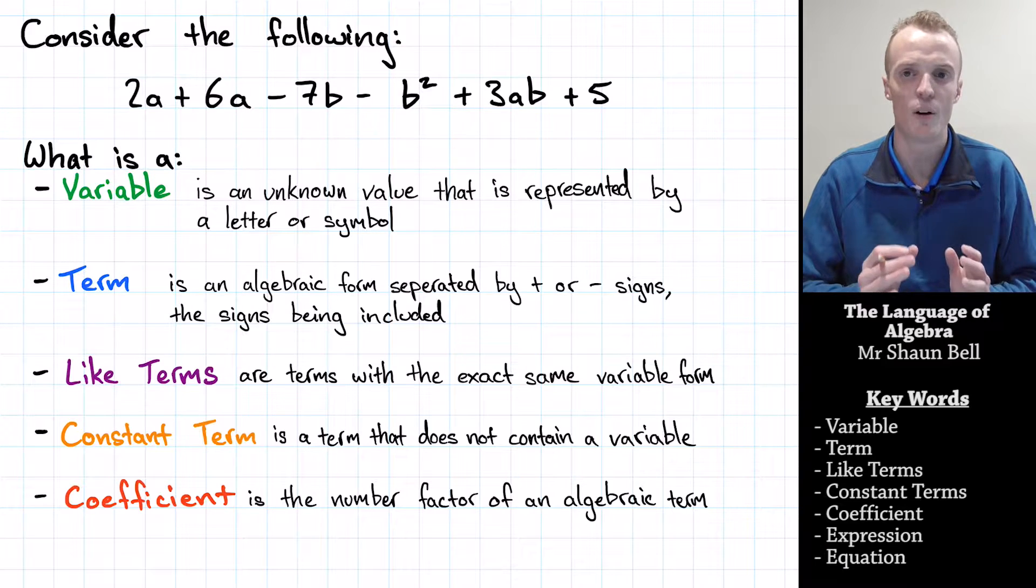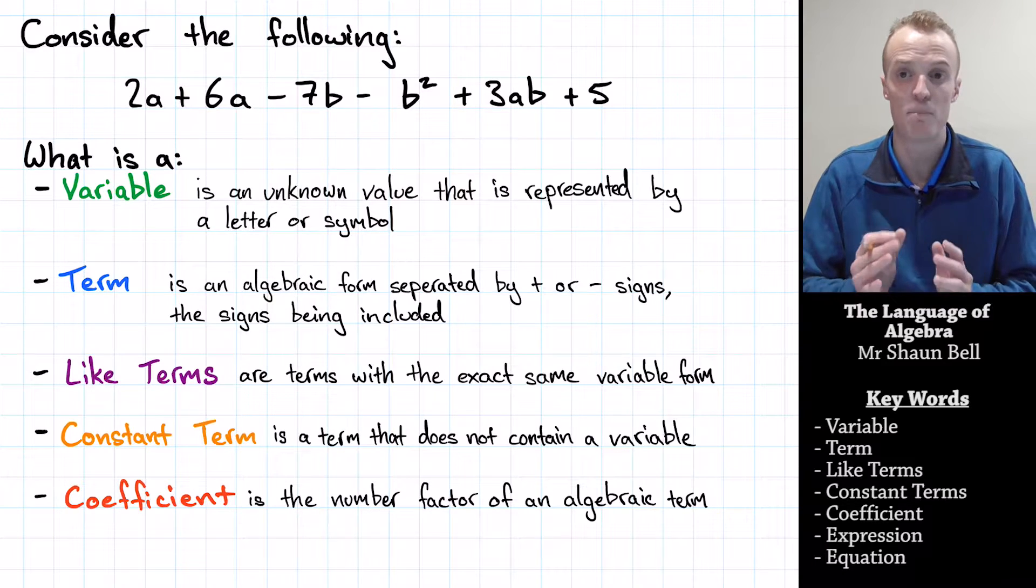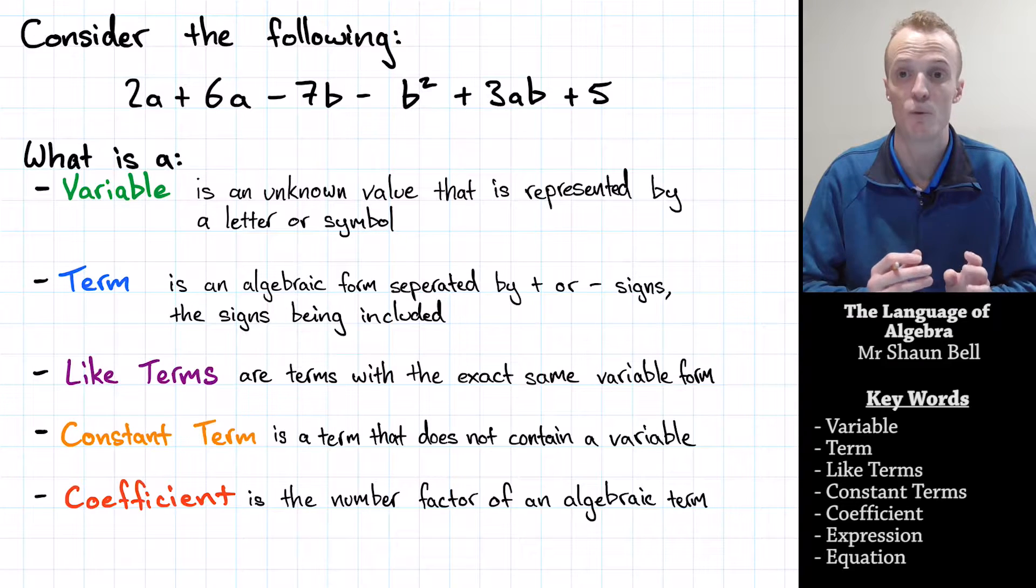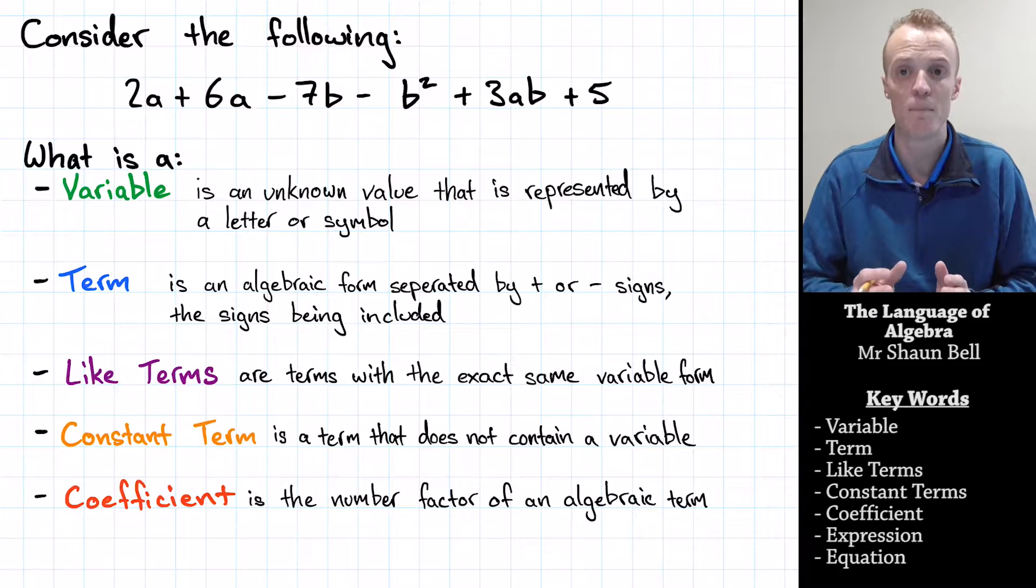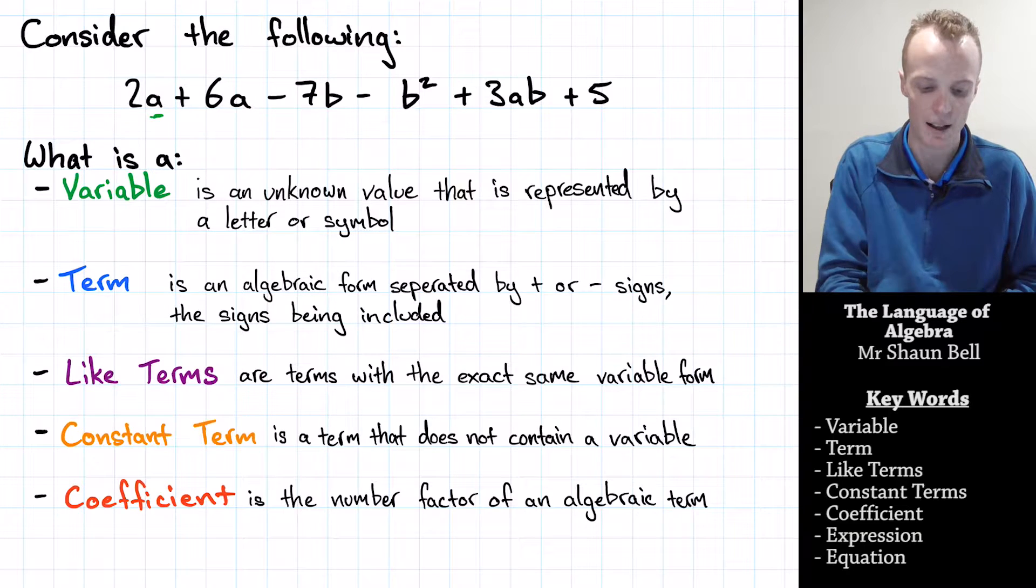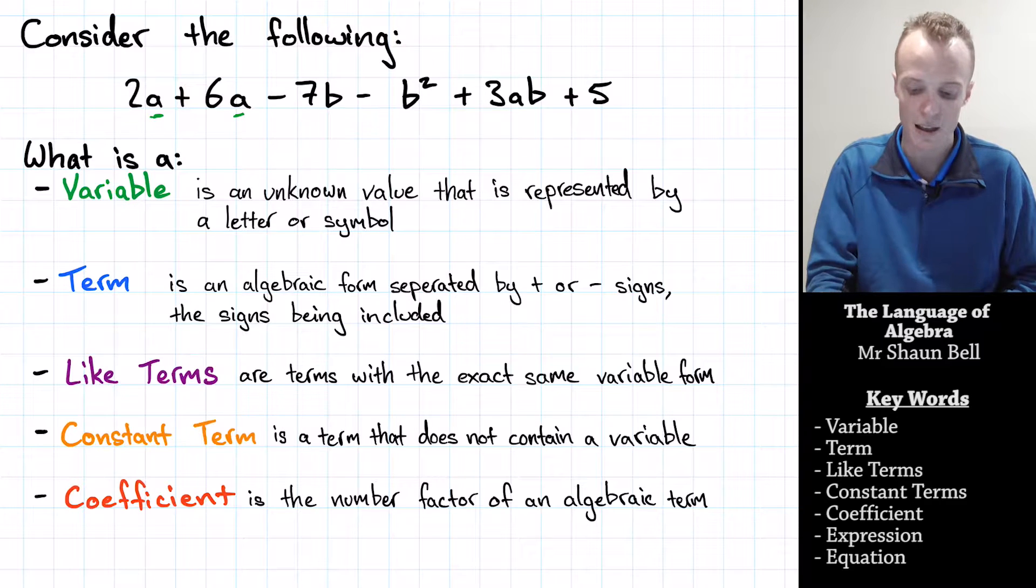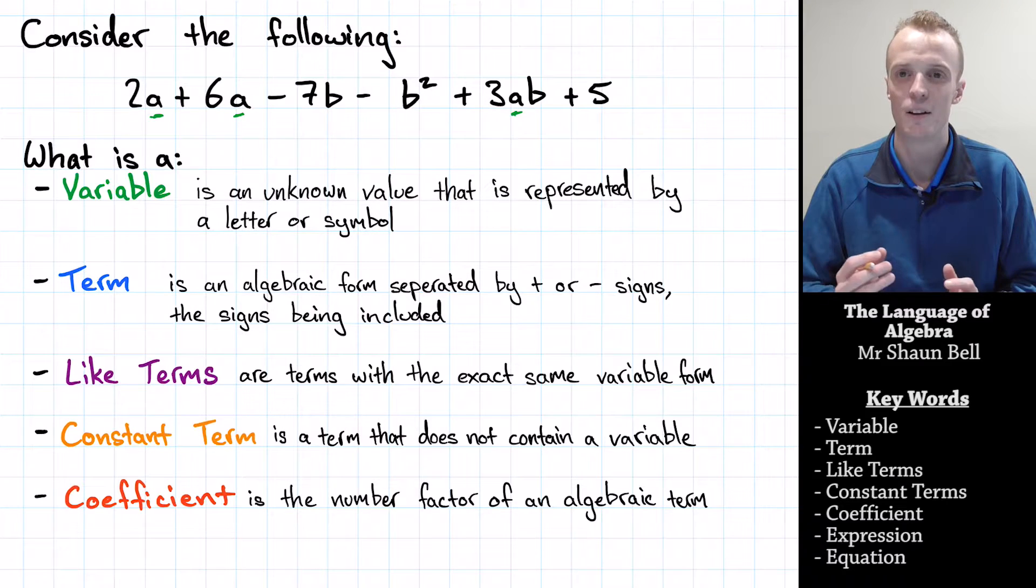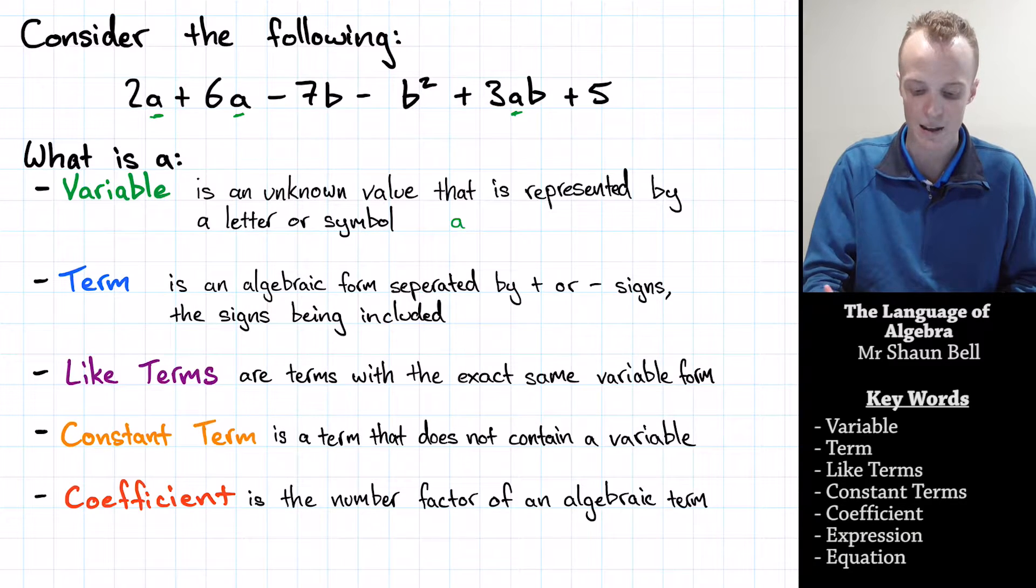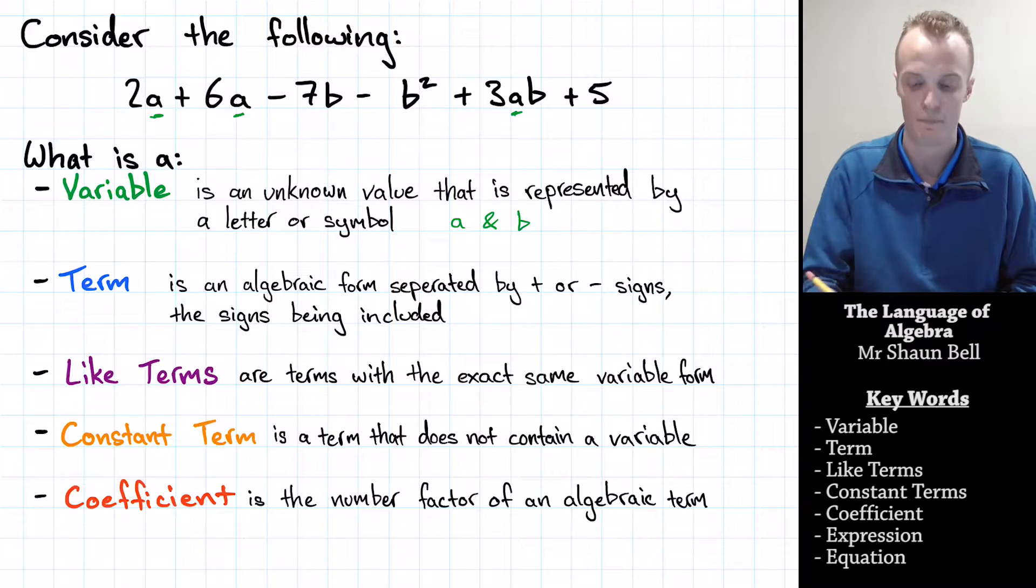If you look at the statement carefully, you'll notice that there's only the letters A and B represented. Where a variable is represented more than once, that unknown number is the same throughout the algebraic statement. That means that this A written here is the same value as this A written here and this A written here. So if I was to identify the different variables in this statement, the different variables are A and B.